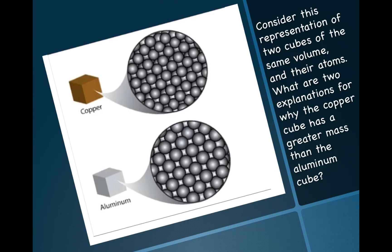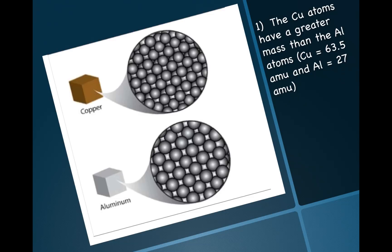Let's consider this representation of two cubes of the same volume. What are the two explanations for why copper has a greater mass than the aluminum cube? Their volumes are the same, but why would copper have a greater mass? Number one: the individual copper atoms have a greater mass than the aluminum atoms. Scientists know that copper has a mass of 63.5 AMU per atom, while aluminum only has a mass of 27 AMU per atom. So copper has a greater mass, which means it makes sense that copper would have a greater density.